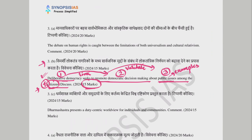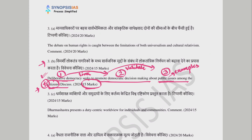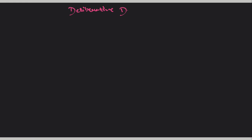Deliberative democracy is our main theme. First, we have to think about what role deliberative democracy plays in general. We need to think about democratic decision-making — what role does it play? We need to think about this role and how it connects.